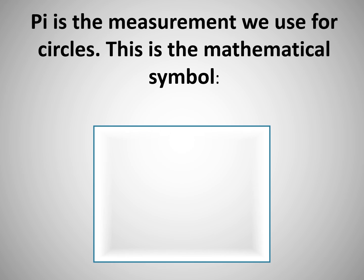Now pi is a measurement we use for circles. This is the mathematical symbol, this is what it looks like on your calculator, and this is how it will be written.